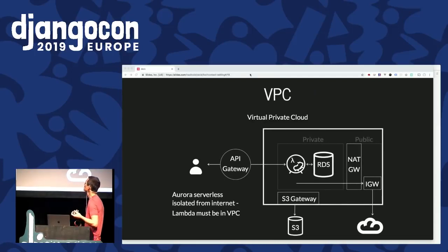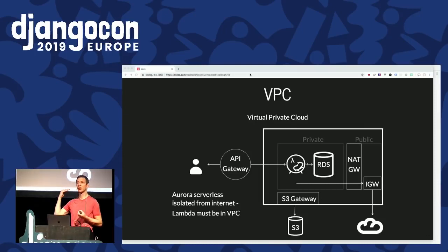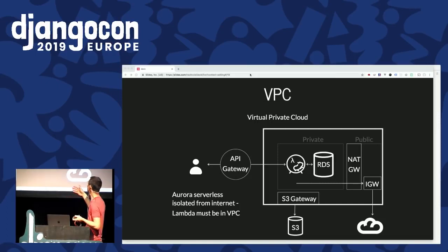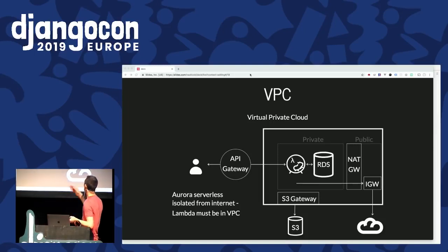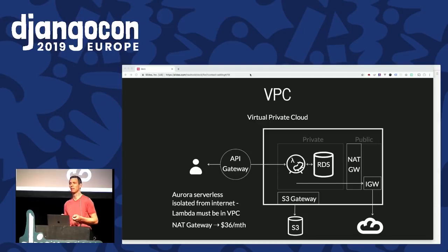Virtual private clouds: with Aurora Serverless you have to use a VPC because it only runs in one — isolated from the internet. That means your Lambda function also has to be in the VPC, which cuts it off from the outside world. To talk to S3 you can use an S3 gateway at no cost. But if your application uses third-party APIs and needs to reach the outside world, you need a NAT gateway, which requires an Elastic IP address. Amazon charges five cents an hour for one — that's $36 a month for an IP address, which makes it hard to justify compared to just running a conventional server.